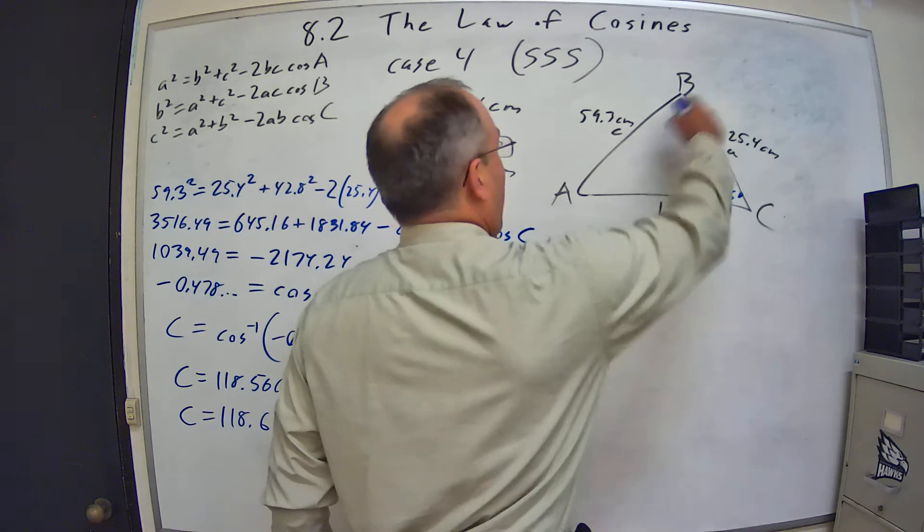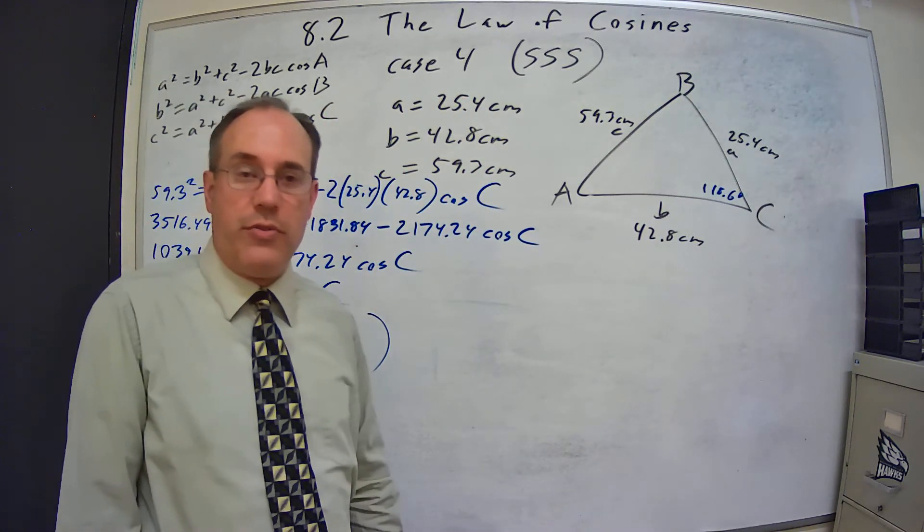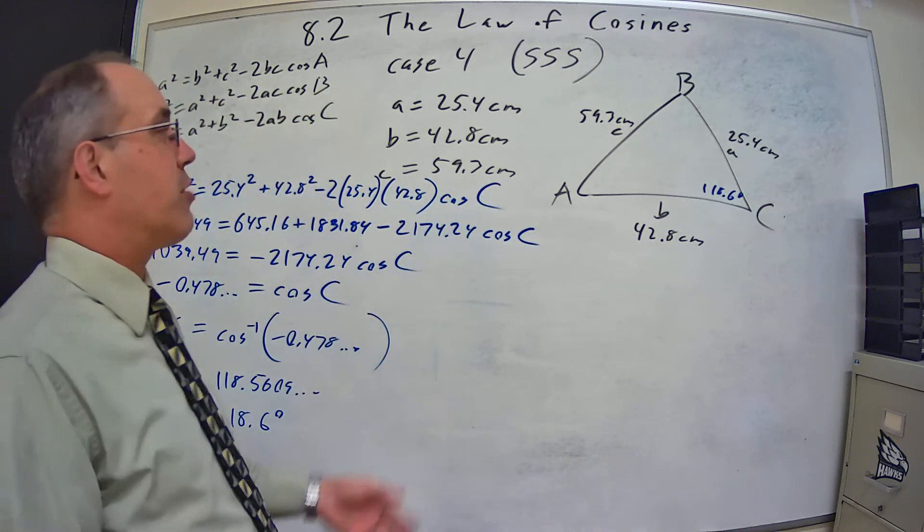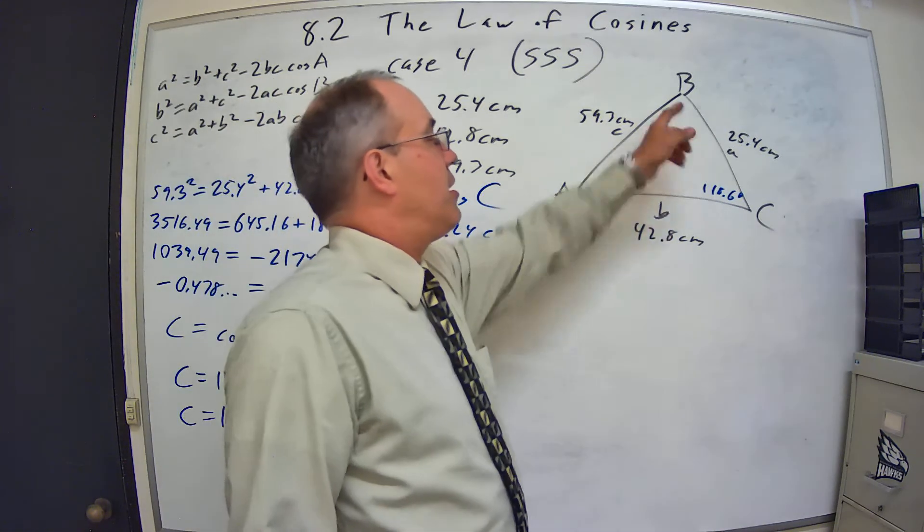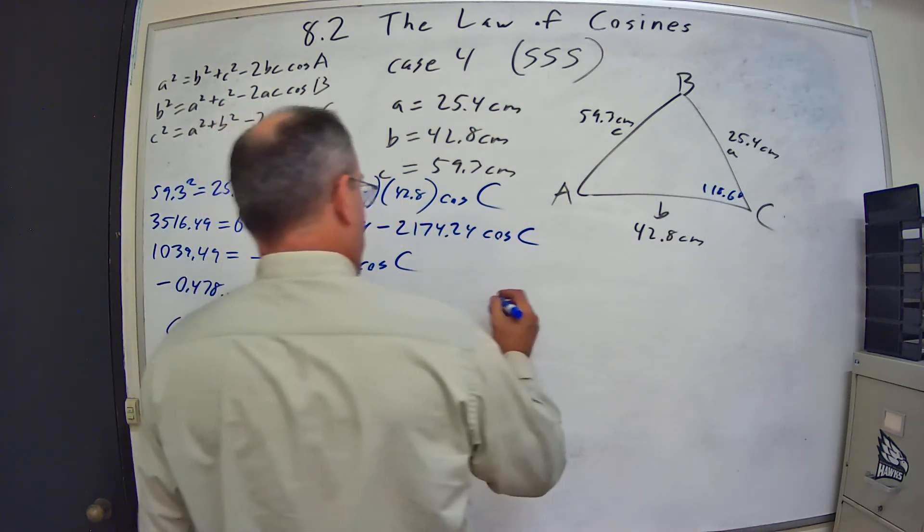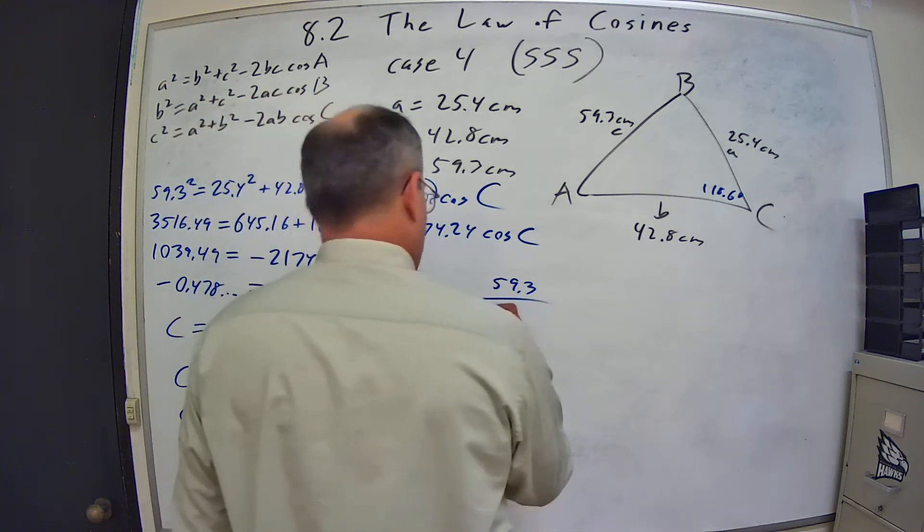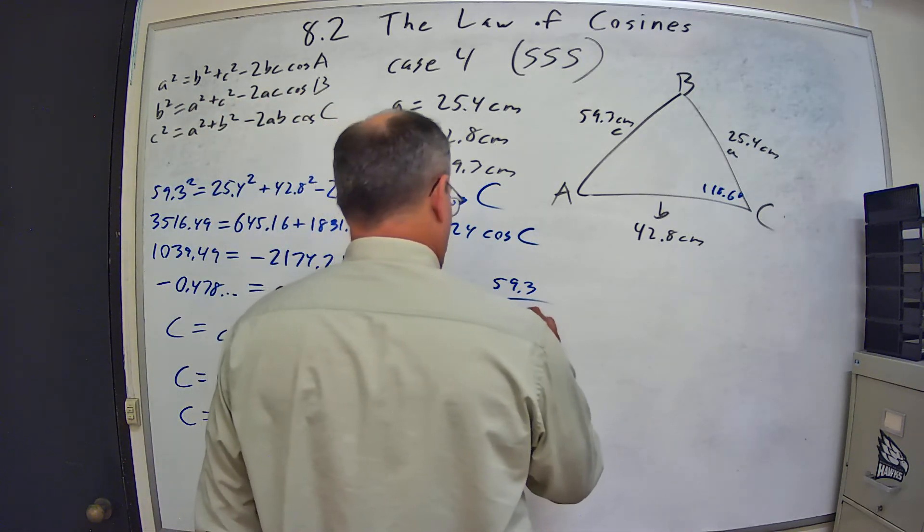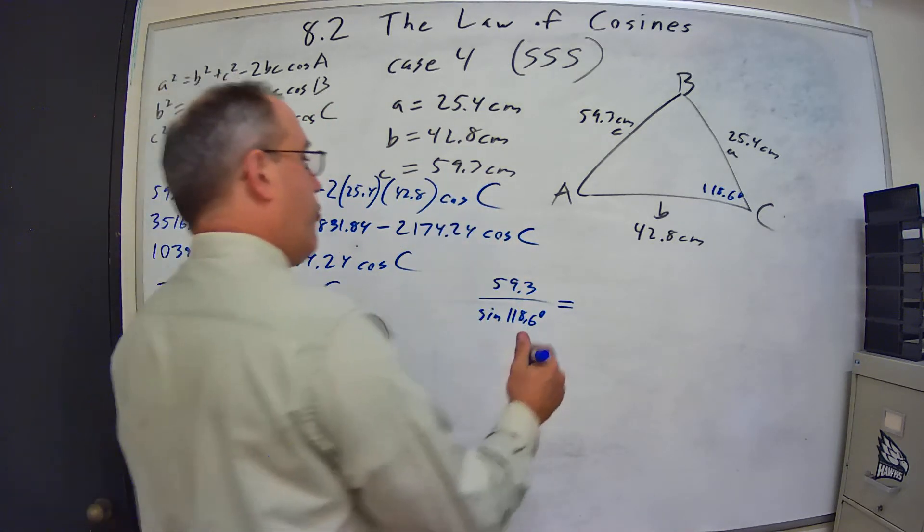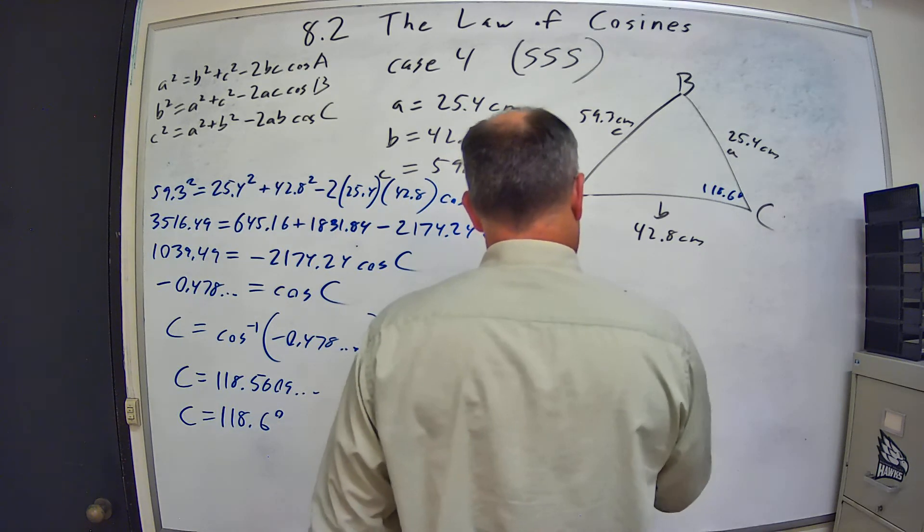Now I can choose either other angle to use because I know they both have to be acute, because I already found my largest angle. So I'm just going to grab one. I'm just going to grab b. And I'm going to use the law of sines. So I have c and angle c, so I'm going to go 59.3 over the sine of 118.6 degrees is equal to, so I'm going for b, so 42.8 over the sine of b.